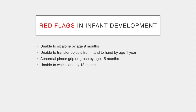Knowing what is typical growth and development for a child's age is a helpful tool to identify when they may not be progressing in the anticipated way, triggering exploration as to possible causes and a plan for investigation and support. Red flags which should prompt investigation include: inability to sit alone by nine months, inability to transfer objects from hand to hand by a year, an abnormal pincer grip or grasp by age 15 months, or inability to walk alone by 18 months. The timings on these red flags have generously allowed for different development timings before stepping in to investigate.